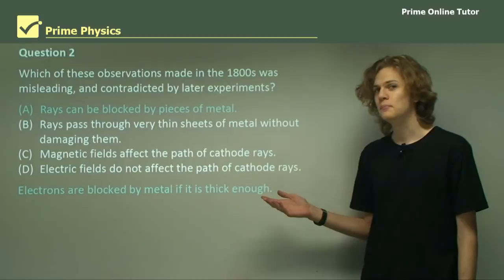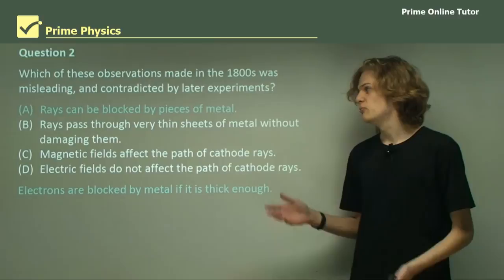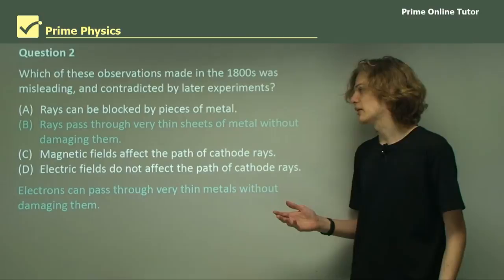A. Rays can be blocked by pieces of metal. Well, we know that electrons can be blocked by thick enough metal, so this doesn't seem too misleading.